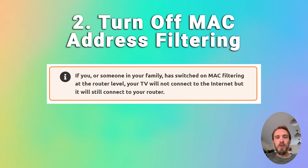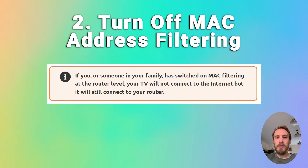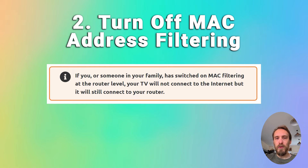Also make sure your router is not set up for MAC address filtering. If someone has switched this on at the router level, your TV will be able to connect to the router but won't be allowed to access the internet through it. If you see a TV connecting to the router but without internet, check for MAC address filtering.